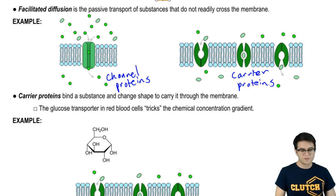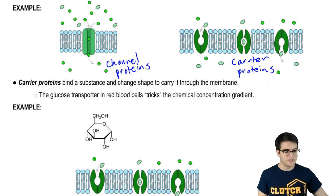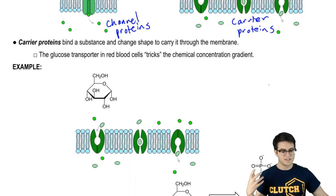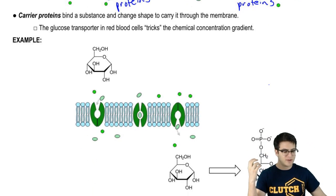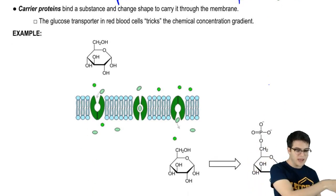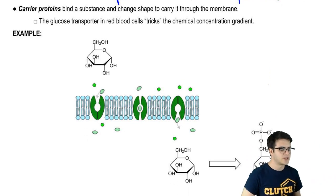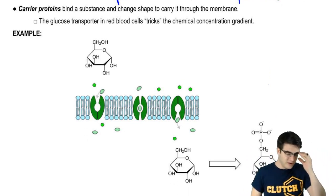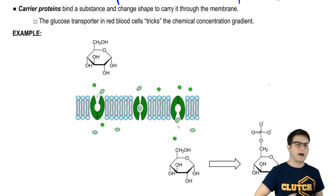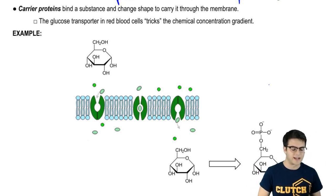Now, as we've said already, carrier proteins bind a substance and change shape, carrying that substance through the membrane, kind of spitting it out on the other side. We haven't really talked about how concentration gradients factor into this.